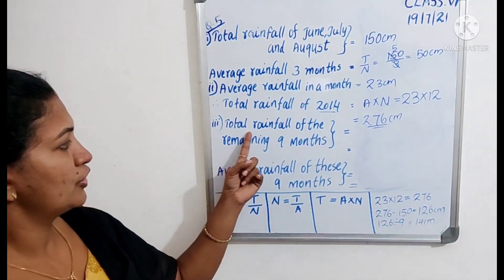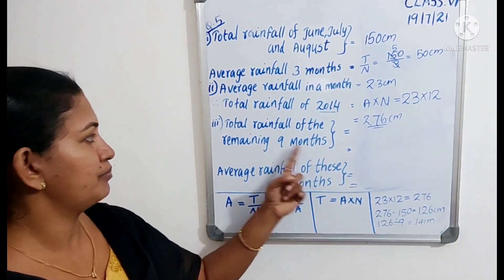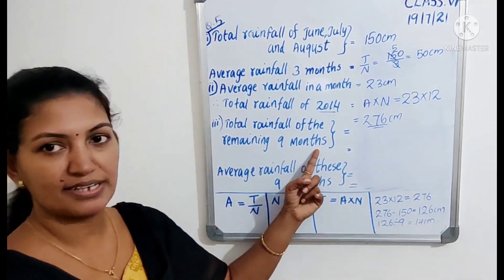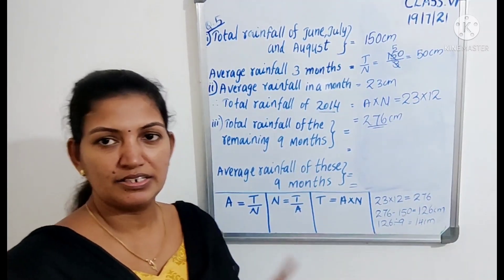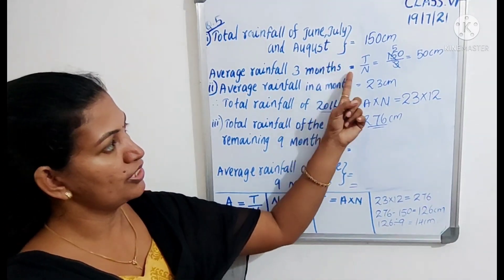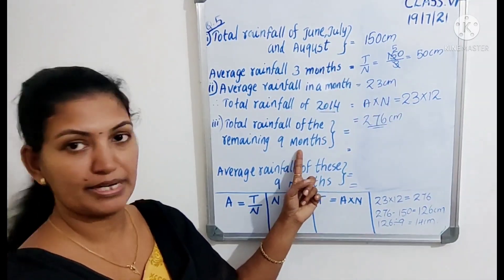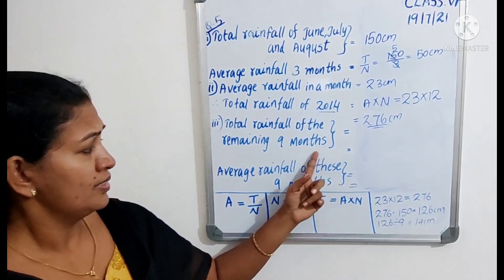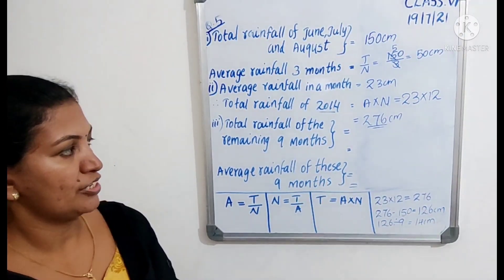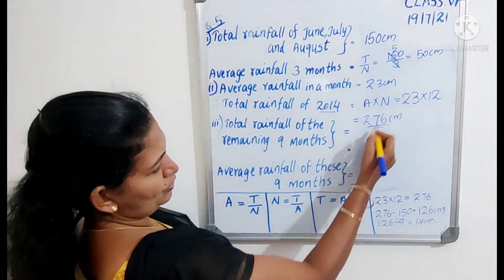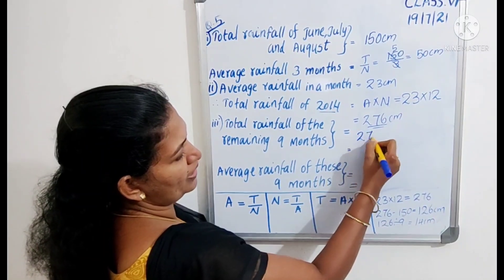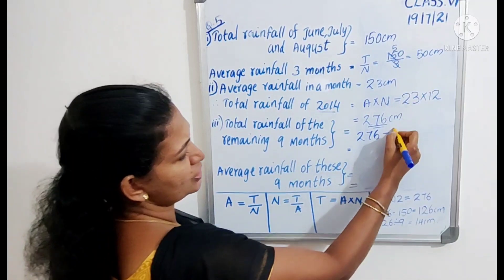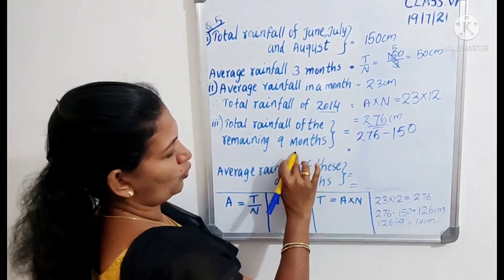Next, the total rainfall of the remaining 9 months — this is the third part of the question. In a year there are 12 months, and 3 months have already been accounted for, leaving 9 months remaining. To find the 9 months' total rainfall: total is 276 cm minus the 3 months' rainfall of 150 cm.